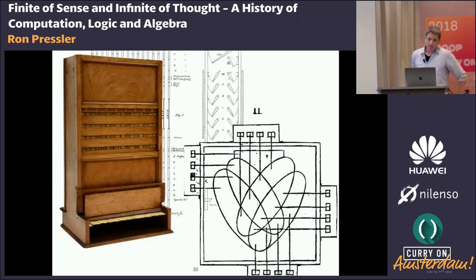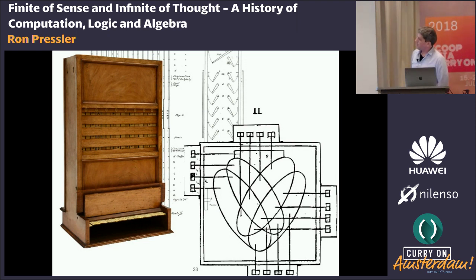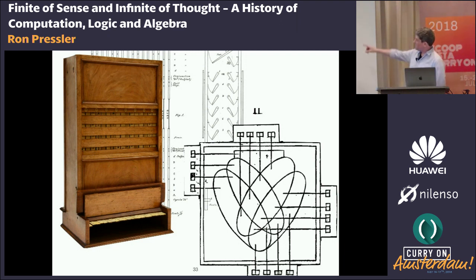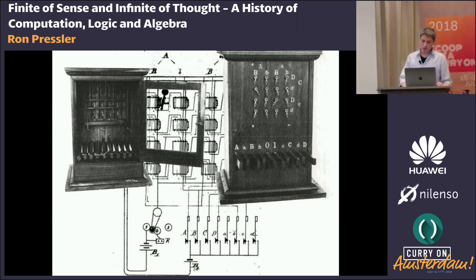The 19th century logicians built and designed a lot of computation machines — logic machines. Jevons' piano could do some calculations in propositional calculus. There was also a machine designed by John Venn, kind of reluctantly, because he was very skeptical of logic machines. There was even an electrical machine built in 1890 by Ellen Marquand, but it's suspected that it was Peirce who actually designed it.